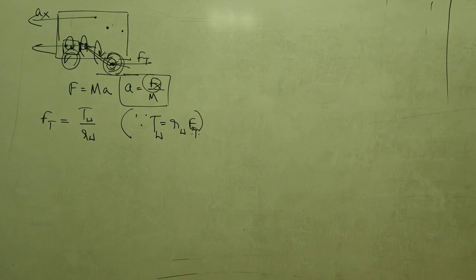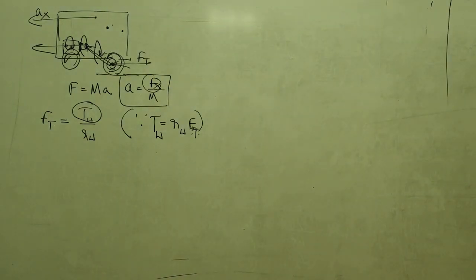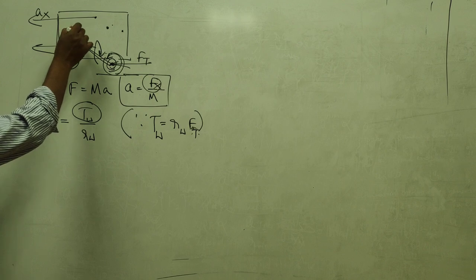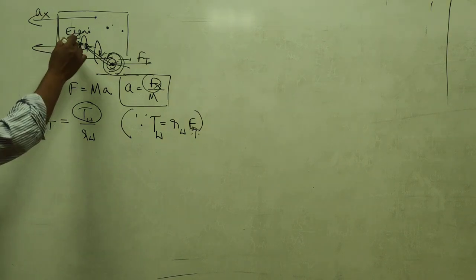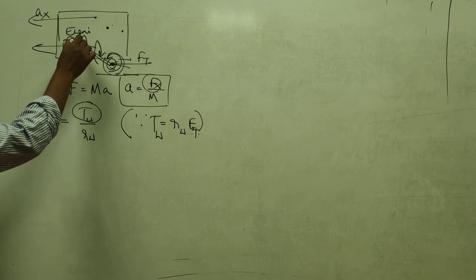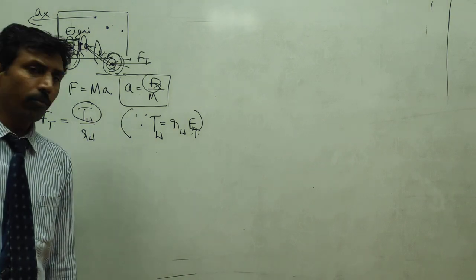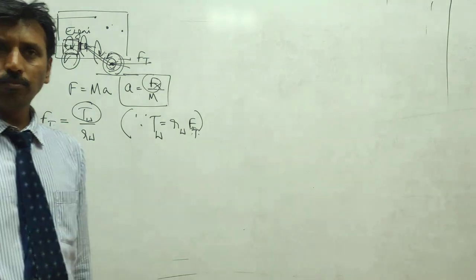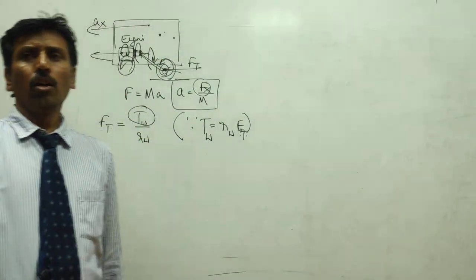Now how do we know the value of TW? Where does the torque come from? The torque comes from the engine, and the engine speed gets reduced at several points. Is the speed of the engine the same as the speed of the clutch? Yes, only when the clutch is engaged. When it is engaged, the clutch speed is the same as the engine speed.